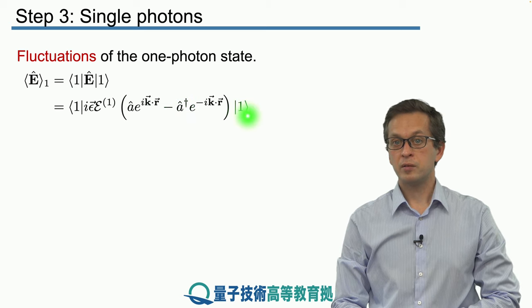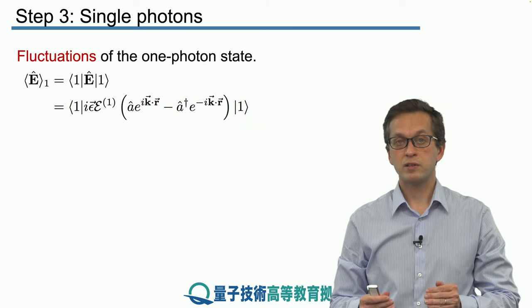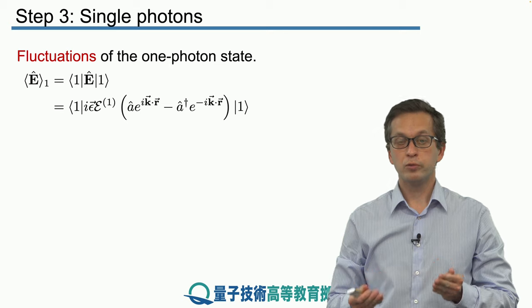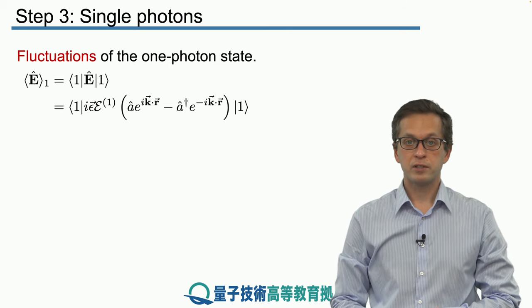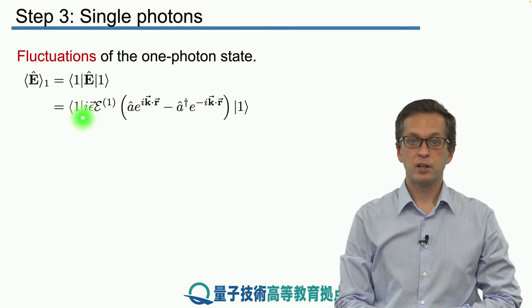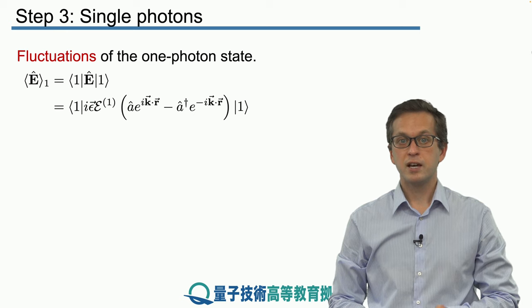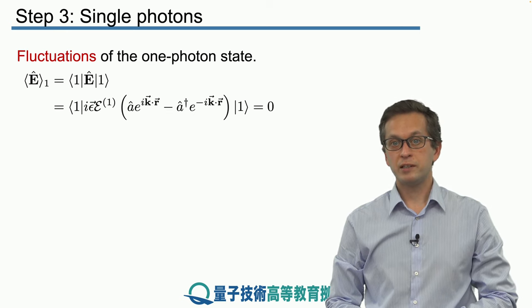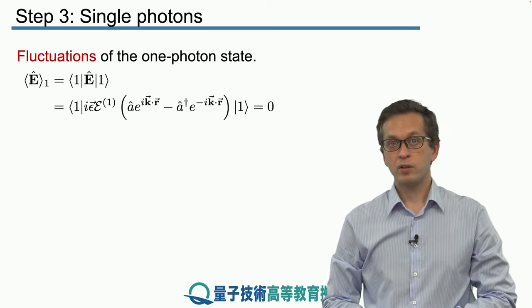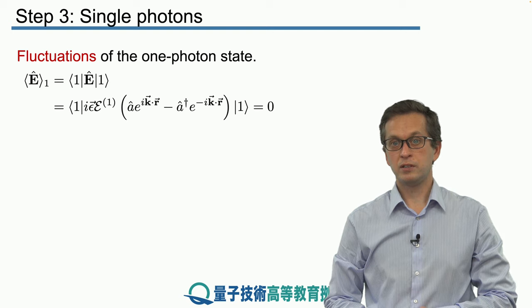A dagger on the end brings our state from a single photon to two photons, which is an orthogonal state with a single photon here, therefore their inner product vanishes, and we see that the average of the electric field, even when we have one photon in the field, is 0.